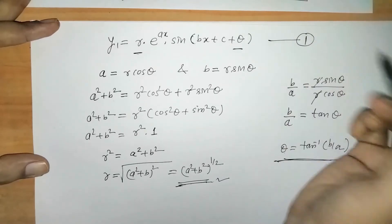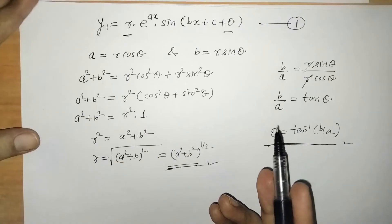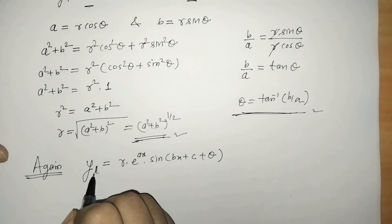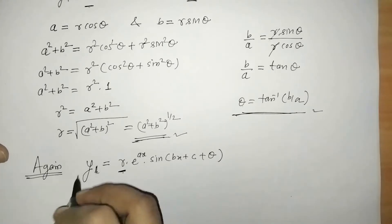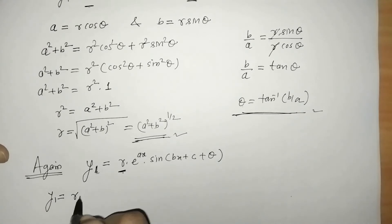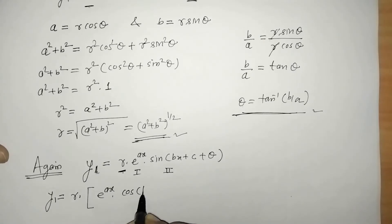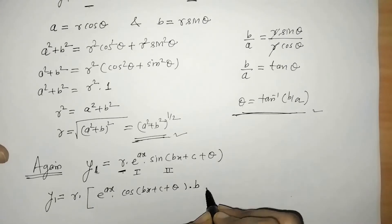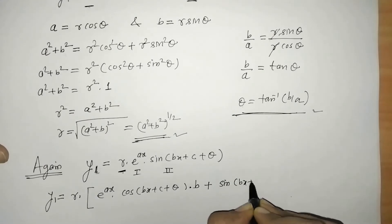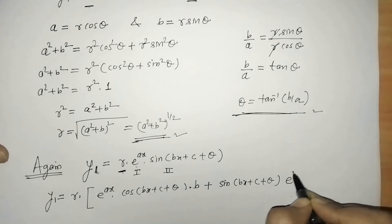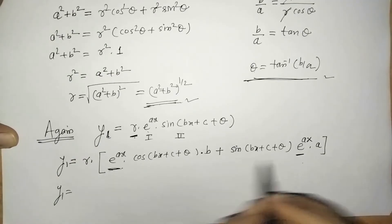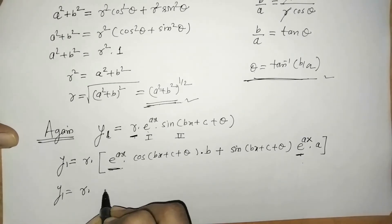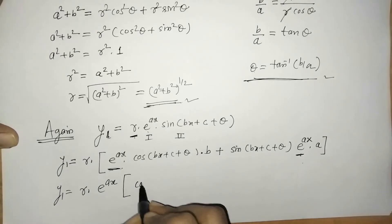So we have found the first derivative. From this we have to find the second derivative. Let's differentiate y1 to get y2. Here r is constant, so applying the product rule: first function into derivative of second gives e^(ax) · cos(bx+c+θ) · b, plus second function as it is into derivative of first, giving e^(ax) · a. Again e^(ax) is common so we take it outside.